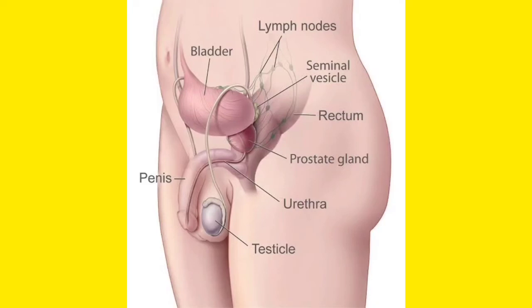You can see the testicles are connected with a tube which is the epididymis, which goes back to the seminal vesicles and prostate. The prostate and the seminal vesicles add chemicals for the formation of semen. The pipe coming through the penis is the urethra. So this is the anatomy of the penis.